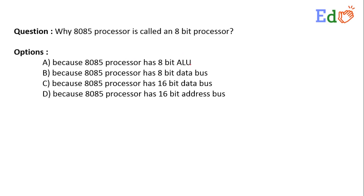We have a question: why is the 8085 processor called an 8-bit processor? Option A: the 8085 processor has an 8-bit ALU. Option B: the 8085 processor has an 8-bit data bus. Option C: the 8085 processor has a 16-bit data bus. Option D: the 8085 processor has a 16-bit address bus.